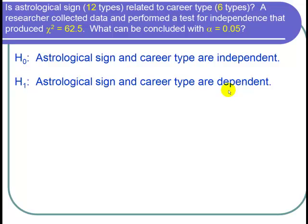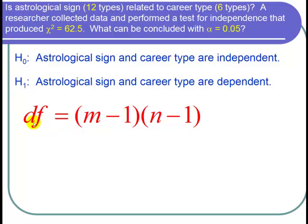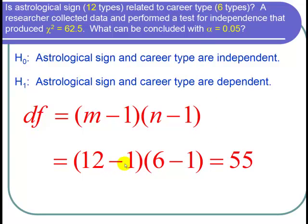So in order to conduct this test we need to find the degrees of freedom. And the formula for degrees of freedom is we take the number of types minus 1 for the first category times the number of types minus 1 for the second category. And we have 12 types of astrological sign and six types of career type. So the degrees of freedom is 12 minus 1 times 6 minus 1 or 11 times 5 which is 55.